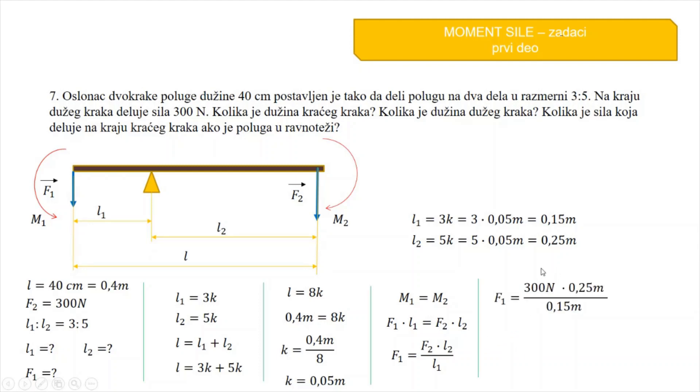Sada ostaje da menjamo. Umesto F2 pišem 300 N, umesto L2 pišem ovo što sam dobio ovde 0.25 metara. A umesto L1 pišem 0.15 metara. 300 puta 0.25 je 75 i prepišem mernu jedinicu i N i metar. Dole prepišem 0.15 metara. 75 podeljeno sa 0.15 je 500. Metar i metar se skrati i ostaje samo N.